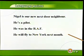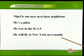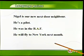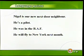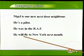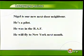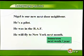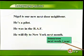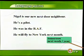He will fly to New York next month. Next month，下个月，说的是将来要发生的事情，所以用了一般将来时will。Fly to，飞往什么地方。那么明天是tomorrow，下个星期是next week，明年是next year。